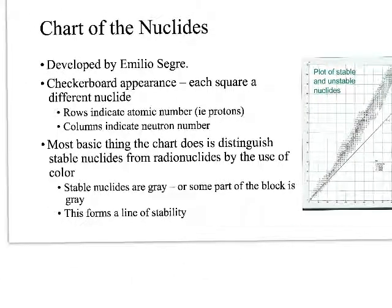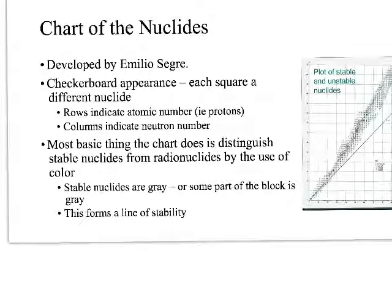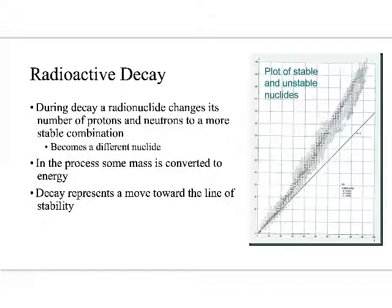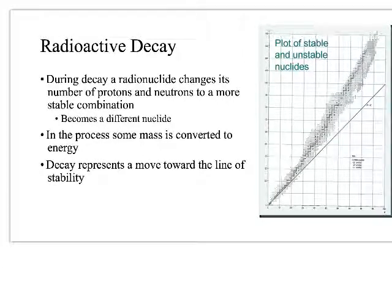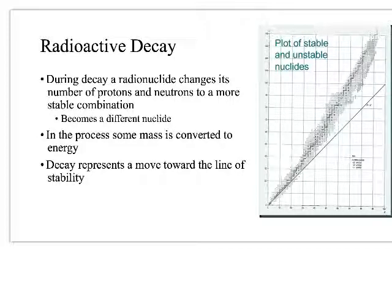The most basic thing this chart does is distinguish stable nuclides from radionuclides by the use of colors. The stable stuff is a nice gray color on the line of stability, and the various radioactive things have different colors assigned to them. In radioactive decay, the radionuclide changes the number of protons and neutrons to a more stable combination — it becomes a different nuclide, often a different element altogether. Some of the mass is converted into energy, and this always represents a movement towards the line of stability. Elements are lazy — they will give off energy only if it's going to let them be more stable.